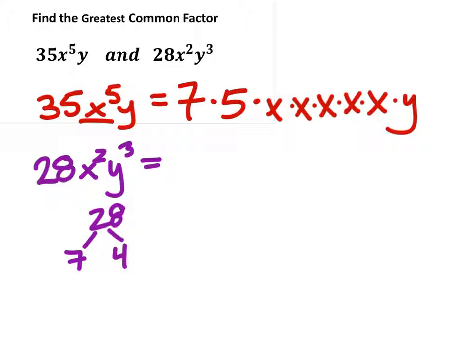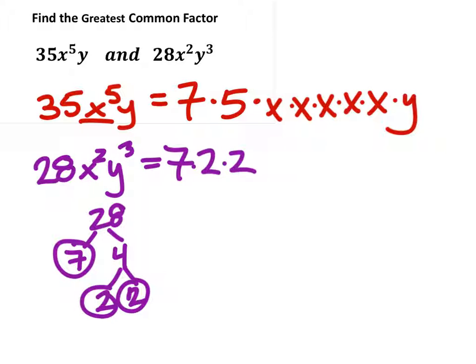And the 14 would split up. In this case, 7 is prime, so I can split the 4 up into 2 and 2, which are also prime. So 28x squared y cubed, the 28 would split out 7 times 2 times 2, and then we would have that multiplied by 2x's, and that would be multiplied by 3y's.